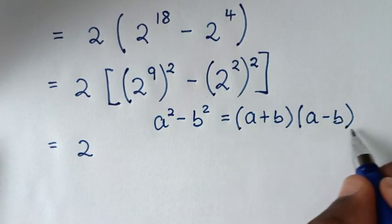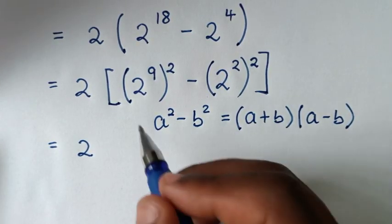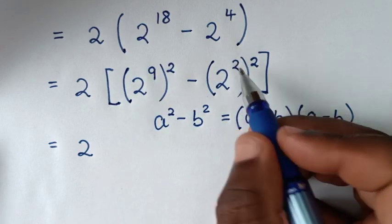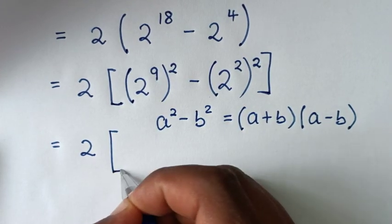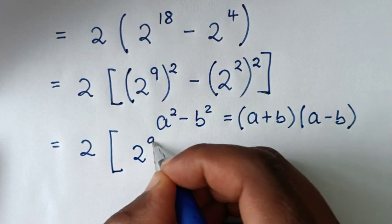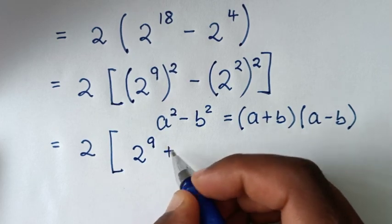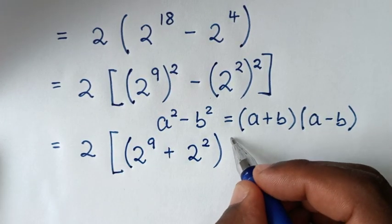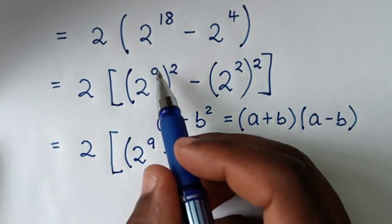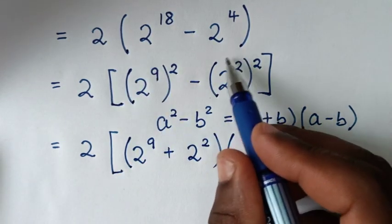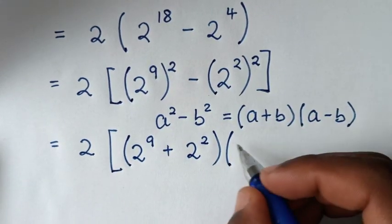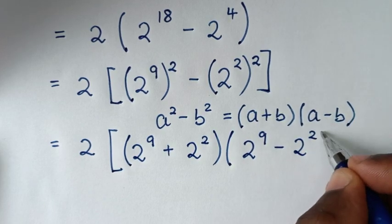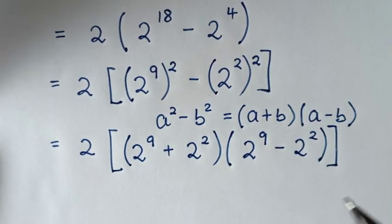Applying this inside the bracket: (2 power of 9 plus 2 power of 2) times (2 power of 9 minus 2 power of 2).